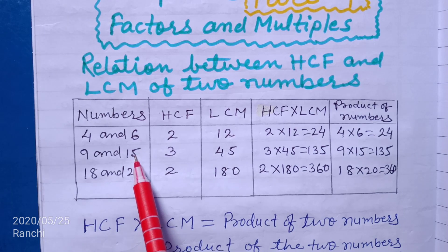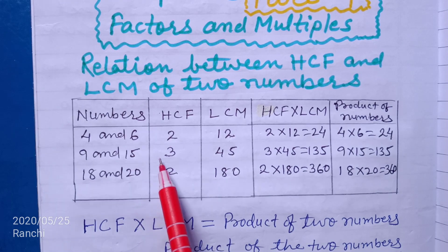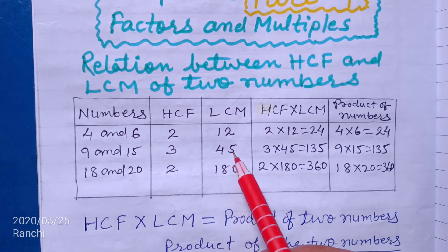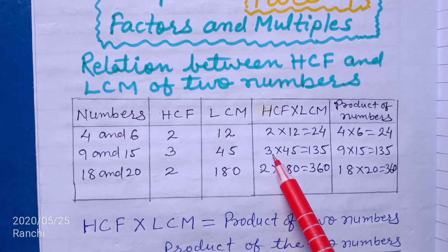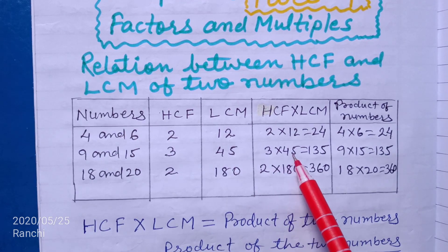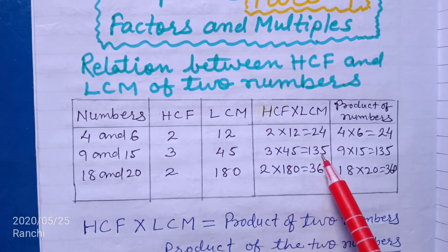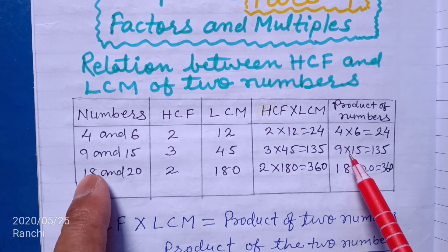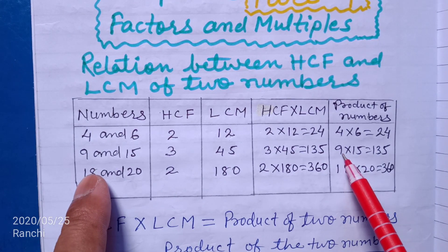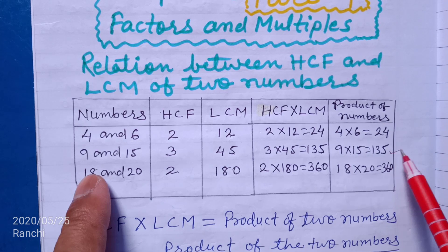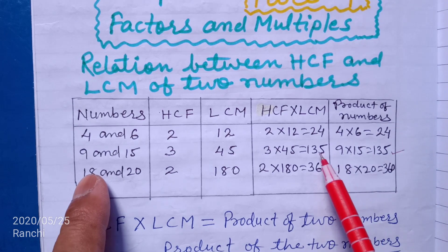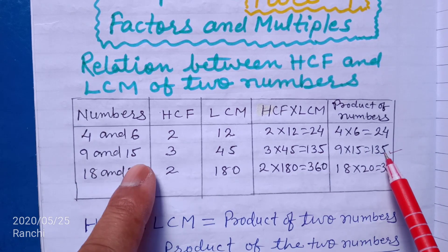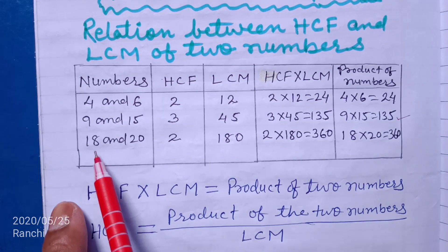Now consider 9 and 15, whose HCF is 3 and LCM is 45. HCF into LCM equal to 3 into 45 equal to 135, and product of numbers: 9 into 15 equal to 135. Again, HCF into LCM equals product of numbers.